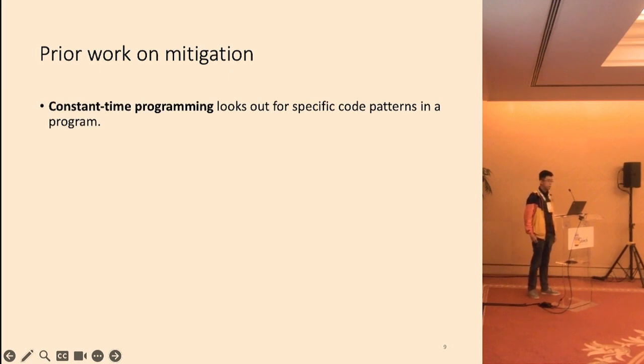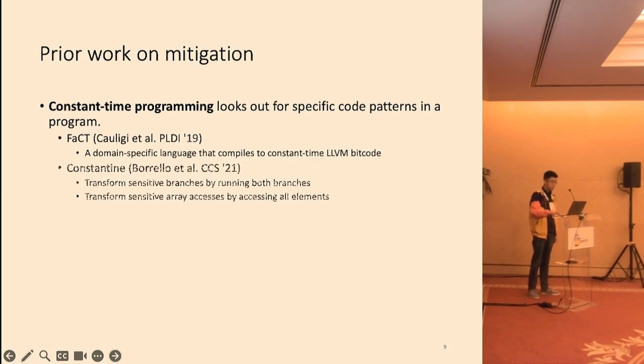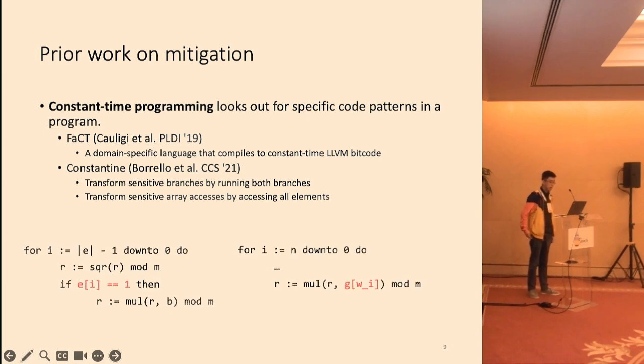Prior work on mitigation has largely used the constant-time programming paradigm, which looks out for specific patterns in a program. More specifically, it looks out for sensitive if conditions and sensitive memory accesses. Both FACT and Constantine are tools that compile leaking programs into constant-time programs. These tools use different techniques to find sensitive if conditions and sensitive array accesses in the program, as highlighted in red. They then use different techniques to transform away the leaking site. However, tools based on constant-time programming paradigm are only able to identify where the leak happens, but not how much information is leaked. The abstraction does not contain enough information to quantify leakage.